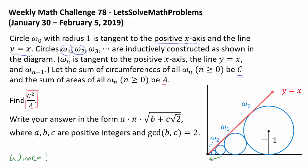Well we want to somehow relate the radii of the circles, because once we have a relationship between the radii, so let's say the radius of the second circle ω₁ is r, then we can find the circumference and areas of every single circle.